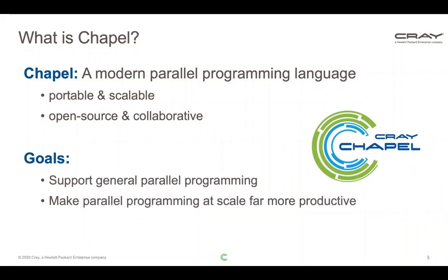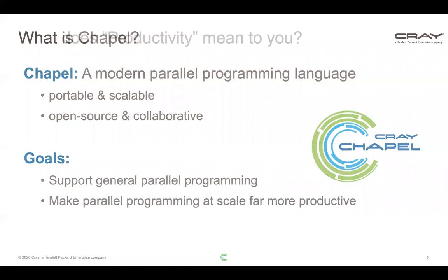Two high-level goals of Chapel are to support general parallel programming — the ability to take any parallel algorithm you have in mind, write it in Chapel, and run it on any parallel hardware. The second is to make parallel programming at scale far more productive than it is today.